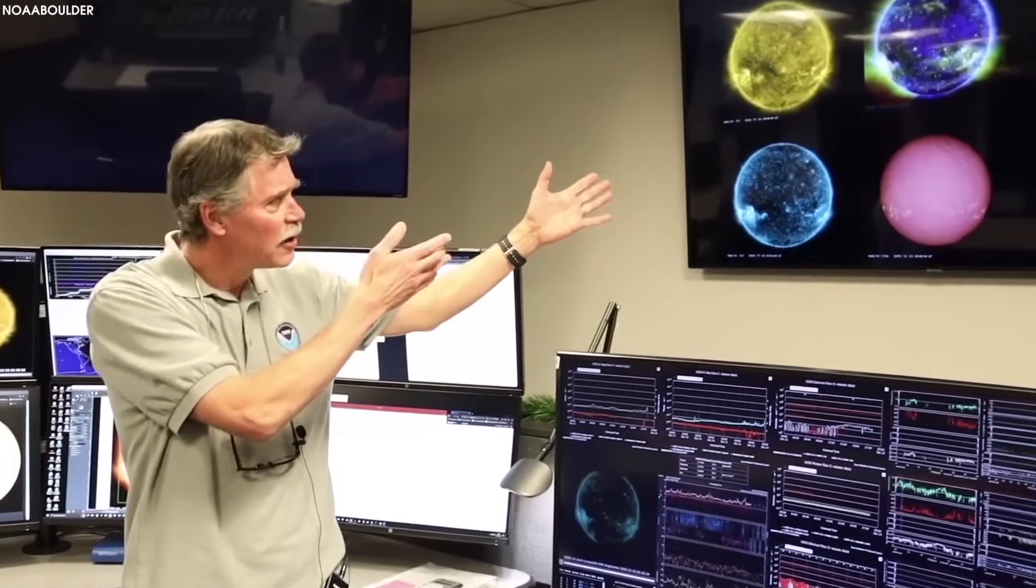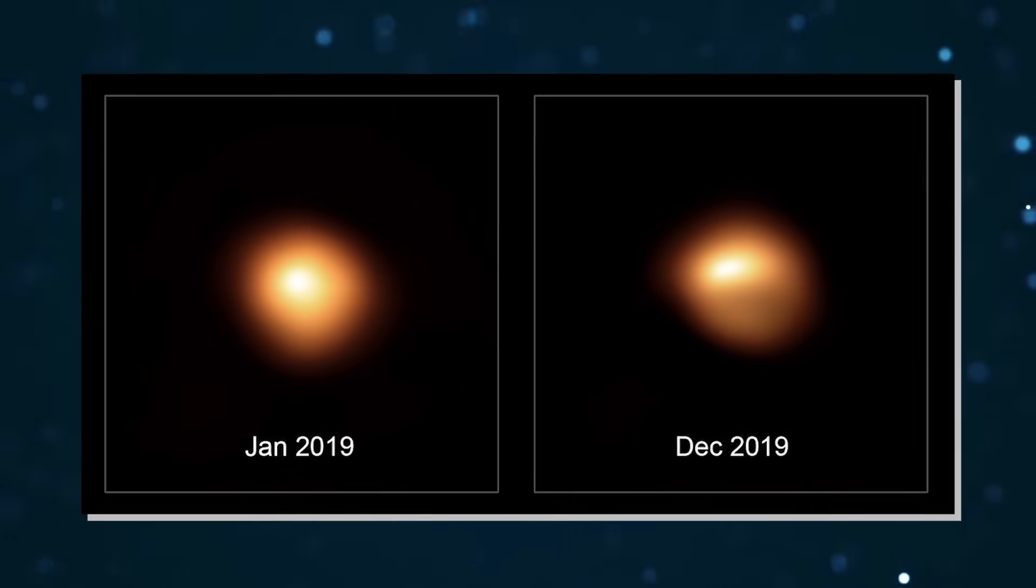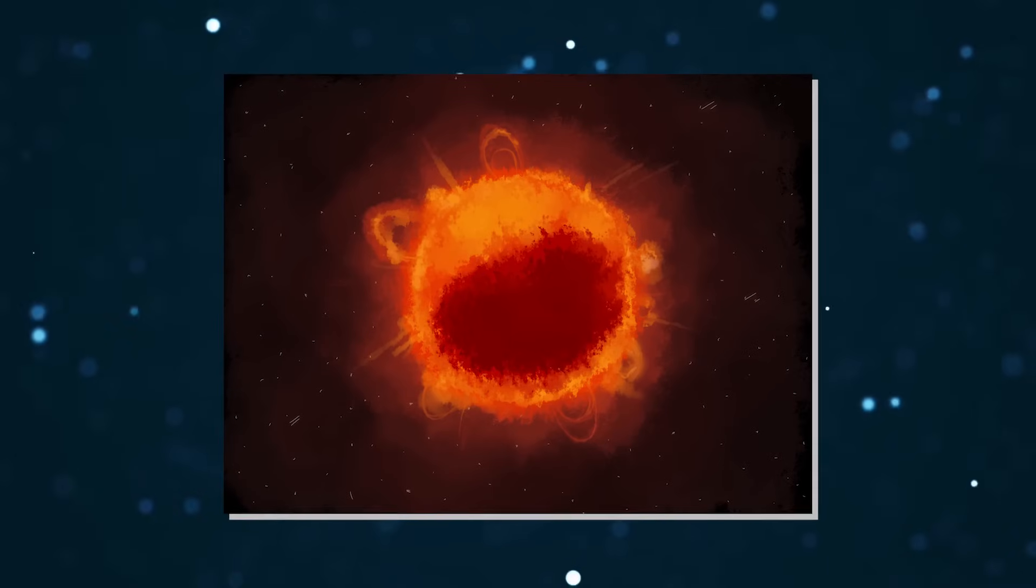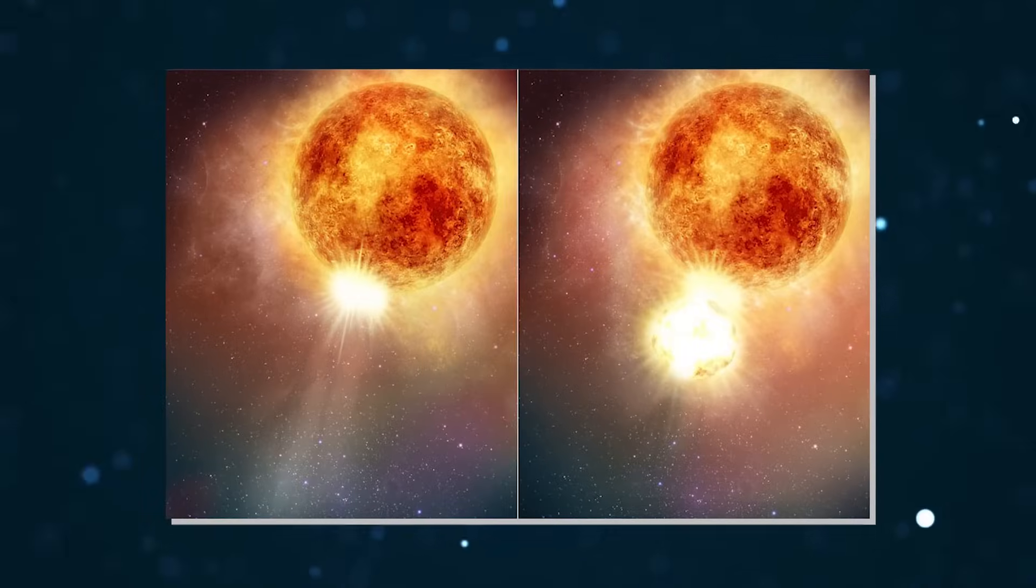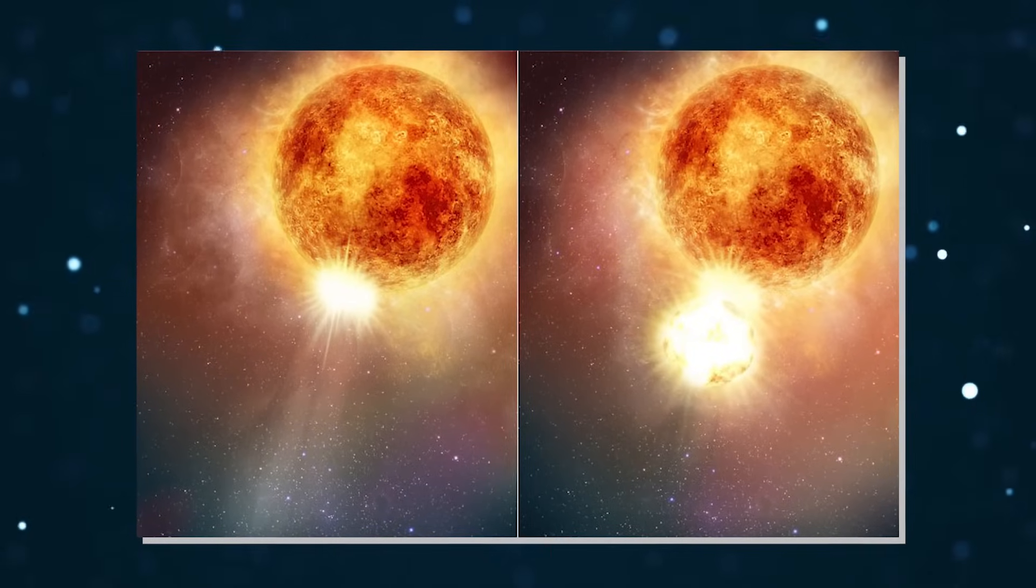In recent years, astronomers noticed that Betelgeuse had begun acting oddly. In a matter of days, it had visibly and drastically dimmed by some 60%, an episode dubbed the Great Dimming Event. At the same time, its shape had changed from a sphere to something resembling a deflated football.